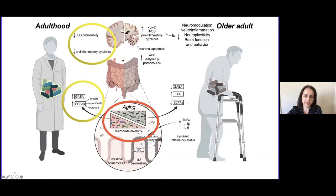This diversity is decreased in older adults. In older adults, we find more inflammation and more toxic compounds released by the gut, and all of that can have a repercussion on the brain and brain function.